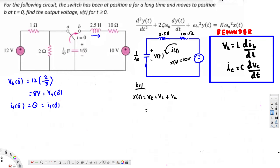X(t) should equal the voltage across the resistor plus the voltage across the inductor plus the voltage across the capacitor. Voltage across the resistor is I(t) times R. Voltage across the inductor we replace with L·dI_L/dt. Voltage across the capacitor is already V(t). To bring everything in terms of V(t), we use the relation I(t) = C·dV_C/dt, and in our case capacitance is 1/40.